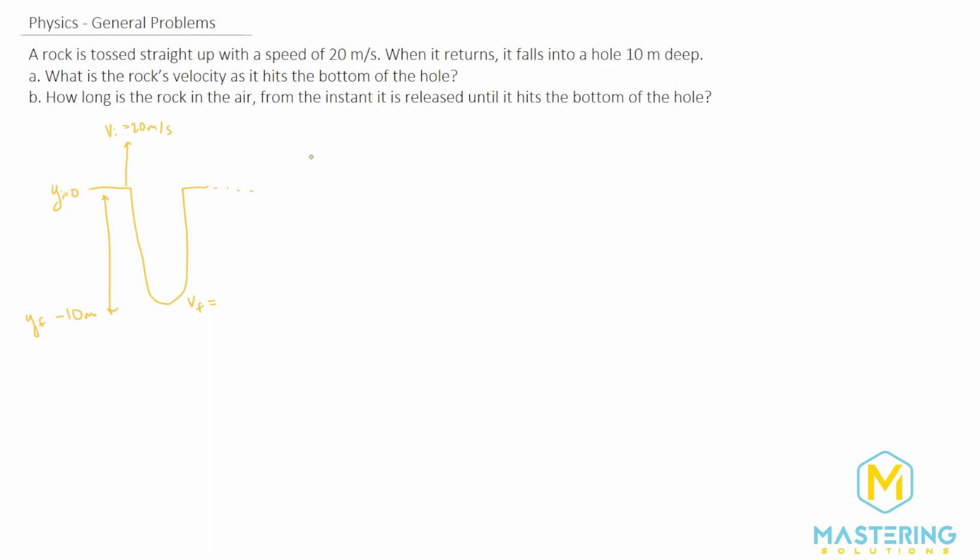So for part A, let's do this way first. So we'll use v final squared is equal to v initial squared plus 2 times the acceleration times the delta y. To isolate v final, we'll take the square root of both sides of the equation. So that gives us v initial squared plus 2 times the acceleration times delta y square root.